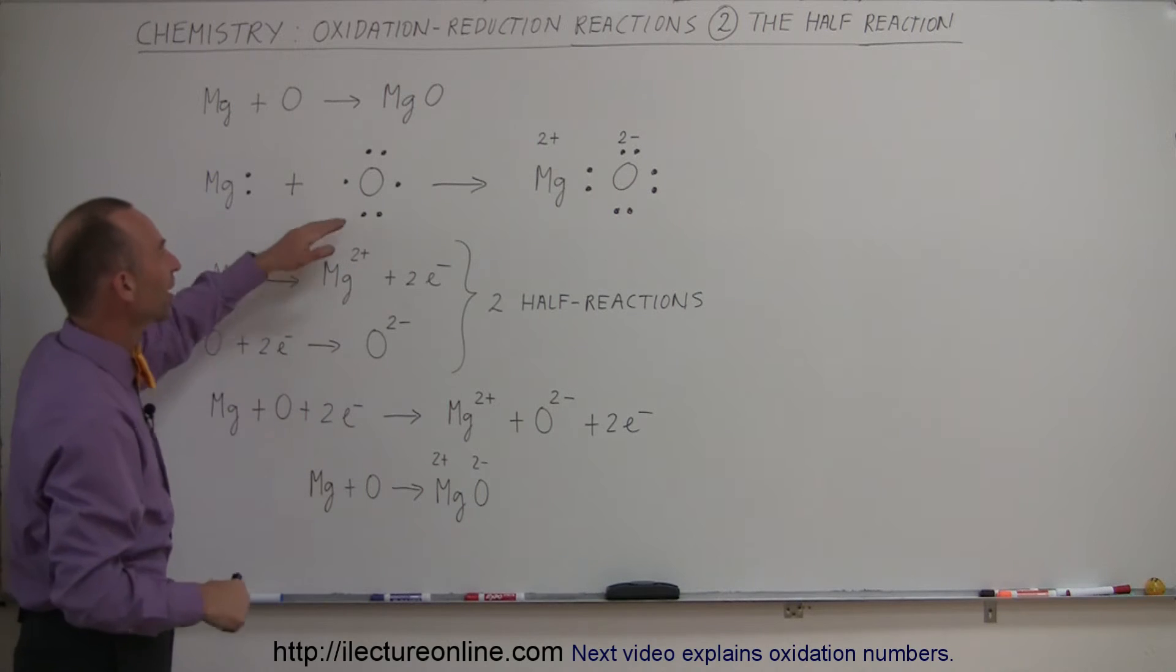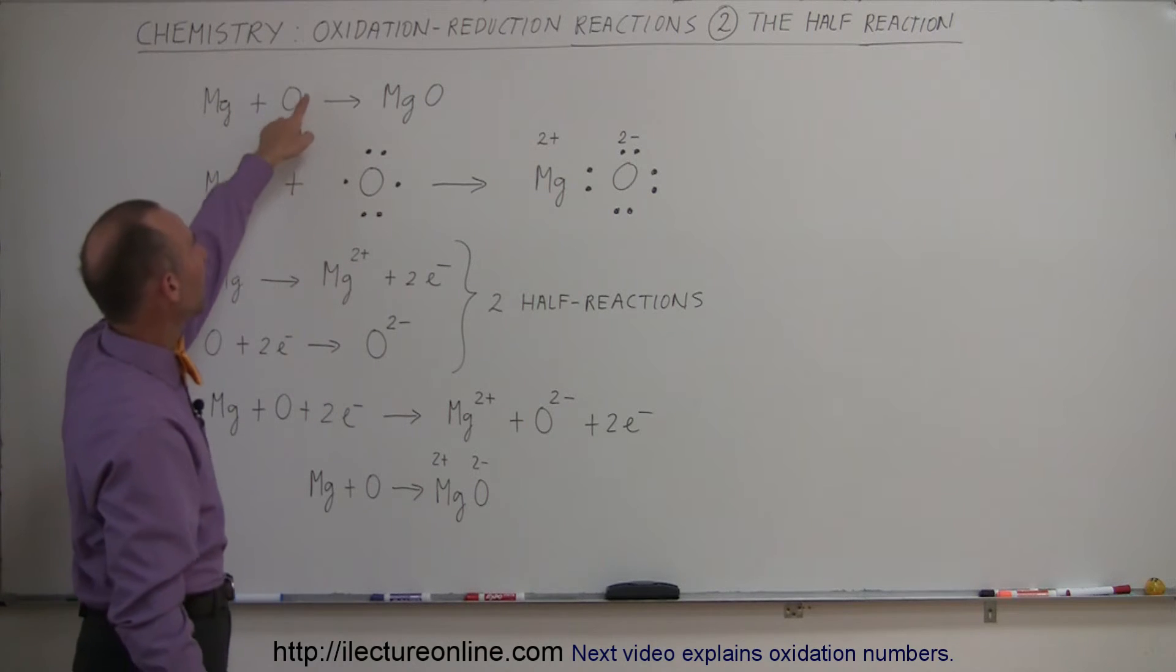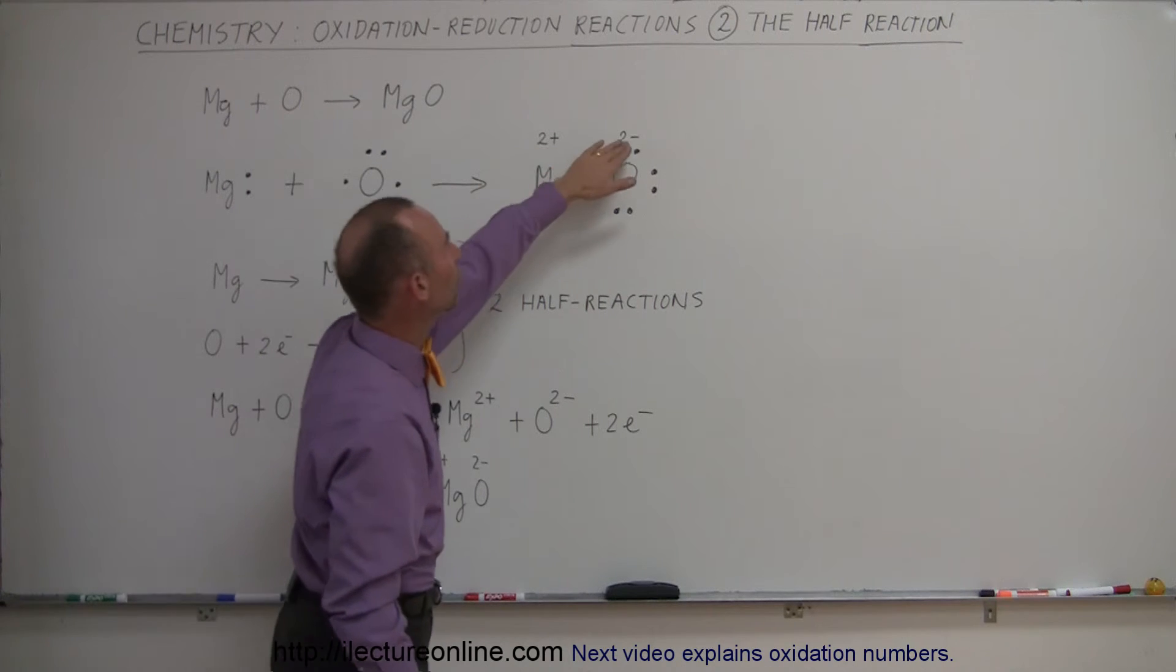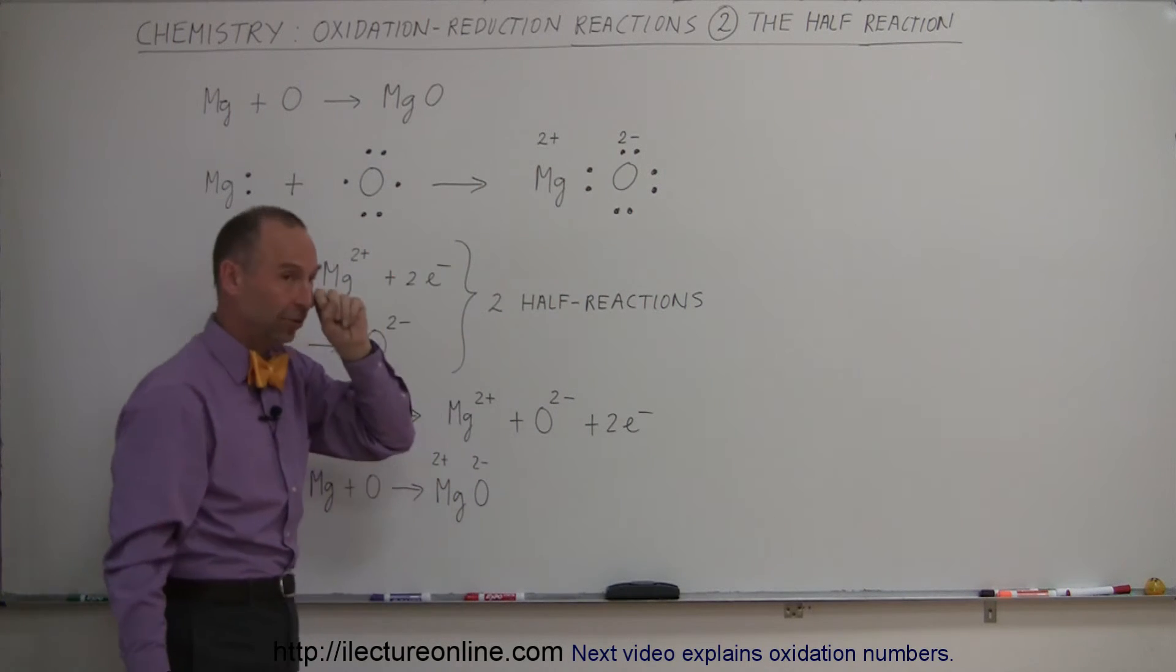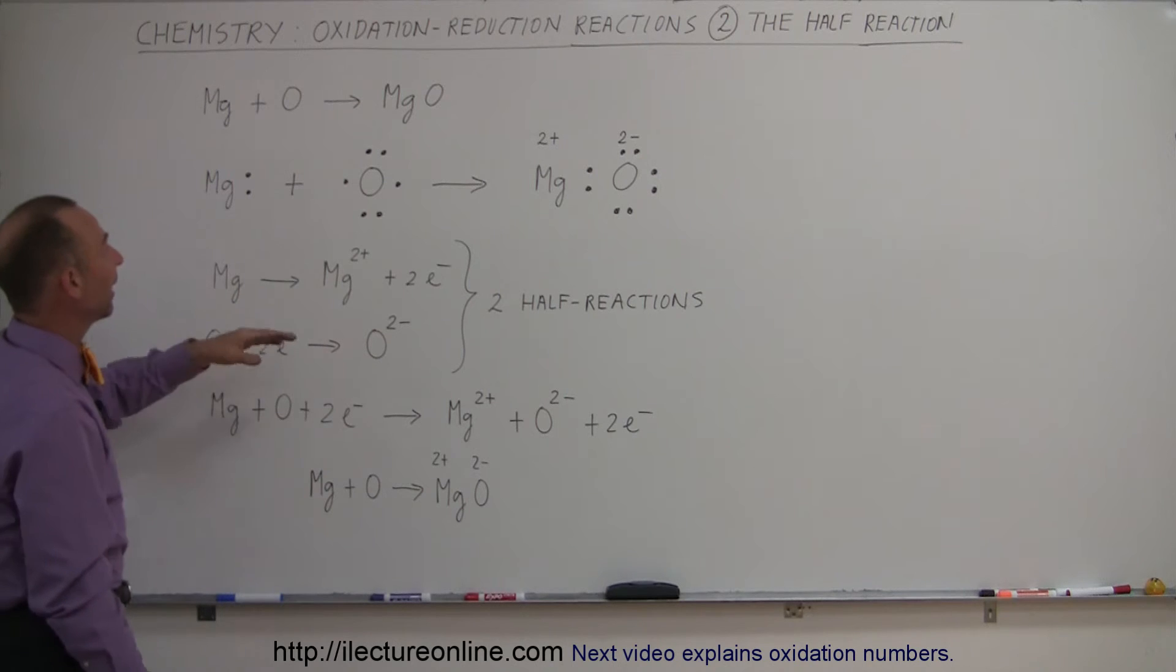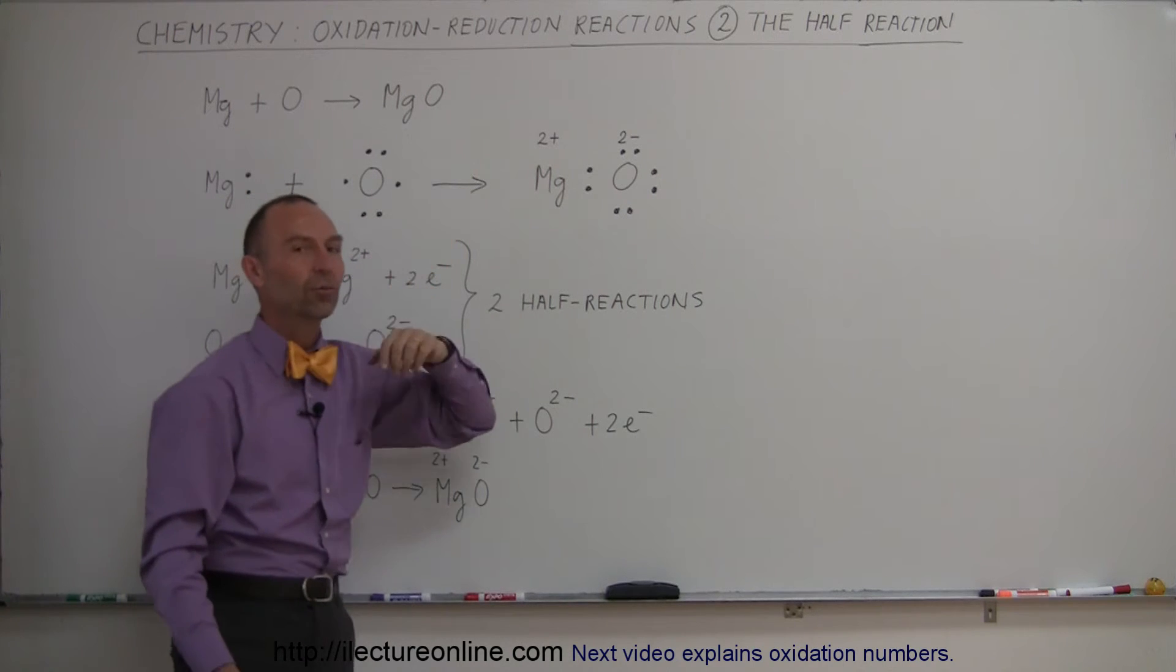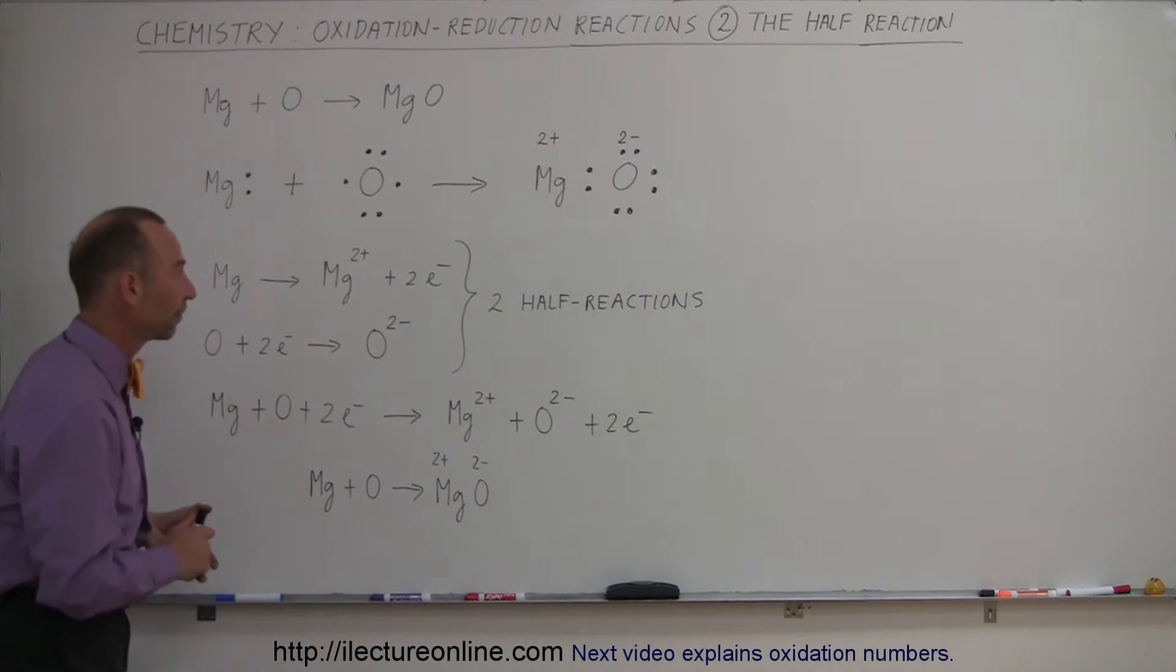Which means, if you think about it, oxygen goes from a zero net charge to a minus two net charge because it gained two extra electrons, that's being reduced. And magnesium will donate two electrons, so its net charge goes to a positive two charge because it's being oxidized.